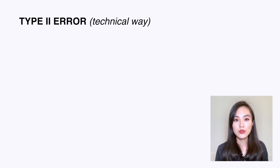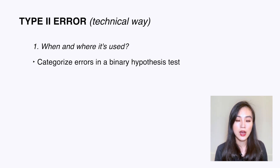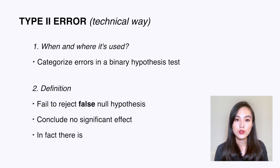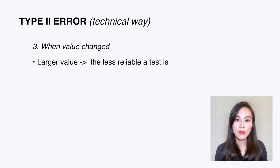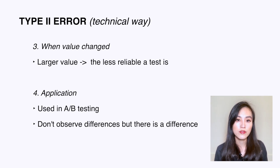Type 2 error, also known as false negative, is used to categorize errors in a binary hypothesis test. It occurs when we fail to reject a null hypothesis that is in fact false — basically we conclude there is no significant effect when there really is one. The larger the value, the less reliable the test results, so we want to minimize type 2 error. It is commonly used in A/B testing to show that we don't observe differences between two groups when in reality there is a difference.